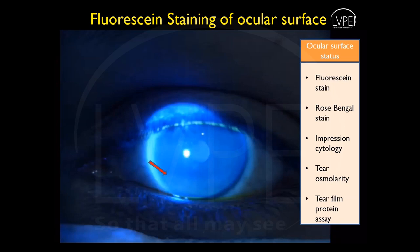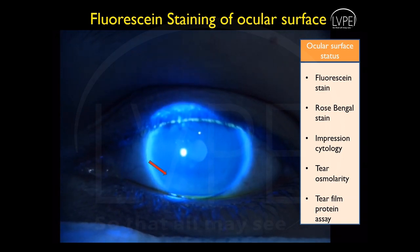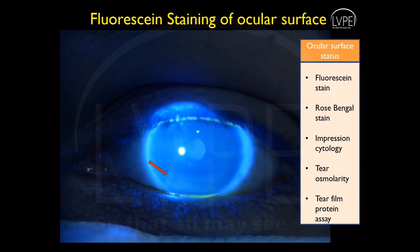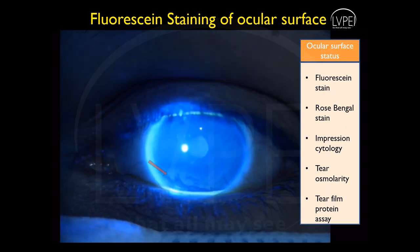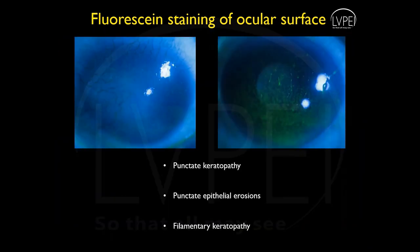Status of the ocular surface can be assessed by staining techniques such as fluorescein, wherein the tear film is stained with fluorescein dye and the patient is asked to blink a couple of times. The patient is then asked not to blink, and the time taken for the first dry spot to appear is recorded in seconds. The test is repeated and an average value is calculated. Fluorescein staining also helps to look at the surface for presence of punctate keratopathy, erosions, and surface irregularities.